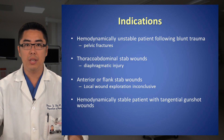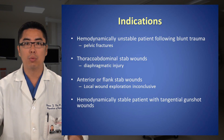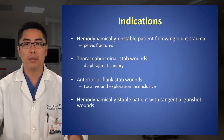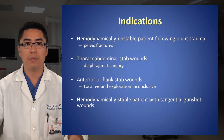At UCSD, patients with thoracoabdominal stab wounds, particularly to the left side, may be candidates for a DPL to rule out diaphragmatic injury. Similarly, patients with an anterior or flank stab wound who have undergone an inconclusive local wound exploration may also be candidates for a DPL to rule out intra-abdominal hemorrhage or injury. Hemodynamically stable patients with tangential gunshot wounds without clear indications for operative intervention may also benefit from a DPL.